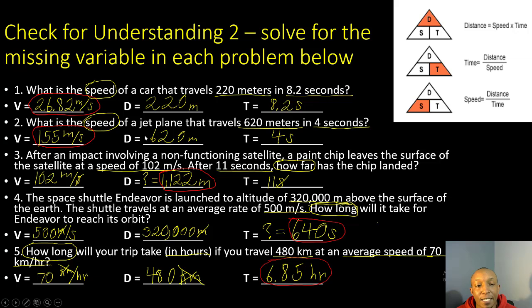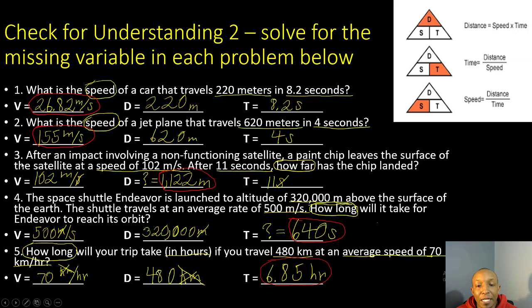Number two: what is the speed of a jet plane that travels 620 meters in 4 seconds? We're solving for speed. Distance is 620 meters, time is 4 seconds. Speed = distance ÷ time: 620 ÷ 4 = 155 meters per second.